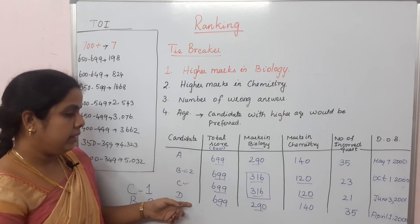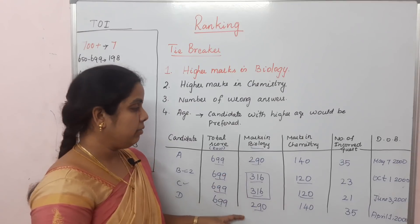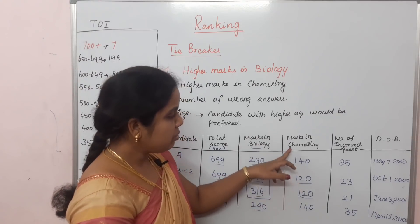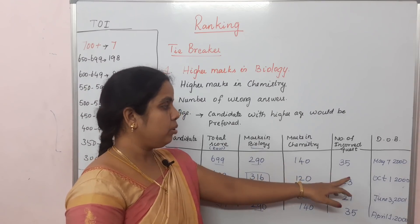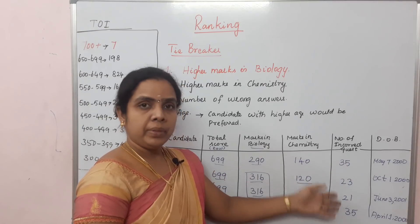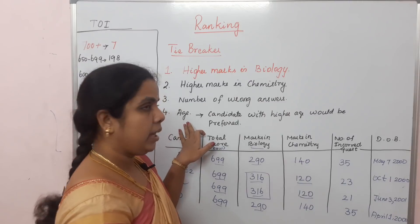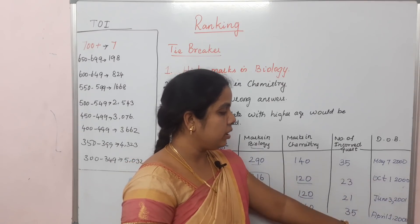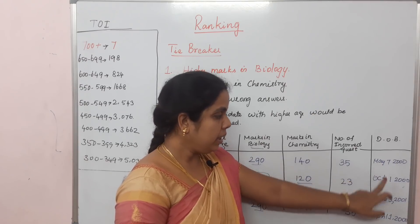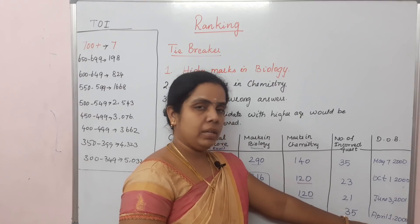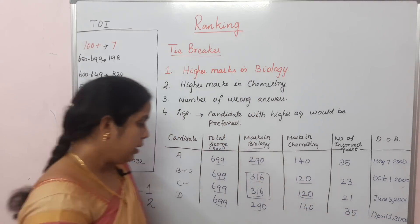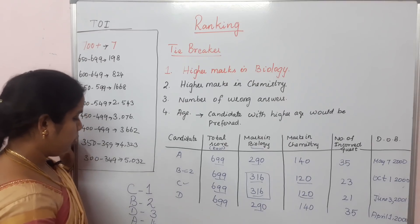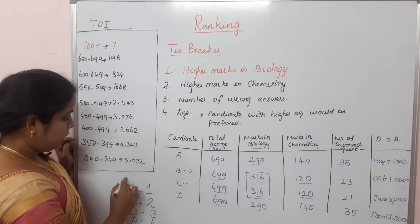For A and D, both have the same biology mark of 290. Moving to tiebreaker 2, chemistry: both have 140 — the same. Moving to tiebreaker 3, wrong answers: A has 35 and D has 35 — still the same. So we move to tiebreaker 4, age. Looking at the year 2000, with days changing: D's birthday is in April and A's is in May. April comes first, so D is older. Candidate D gets rank 3 and Candidate A gets rank 4. The final ranking is C, B, D, A.